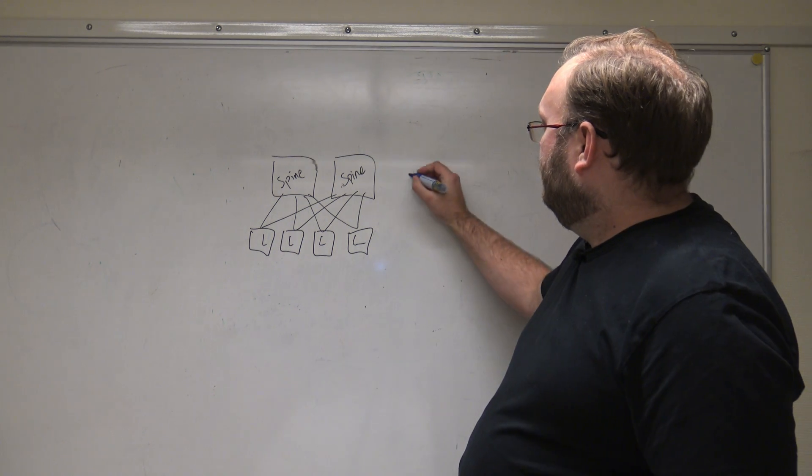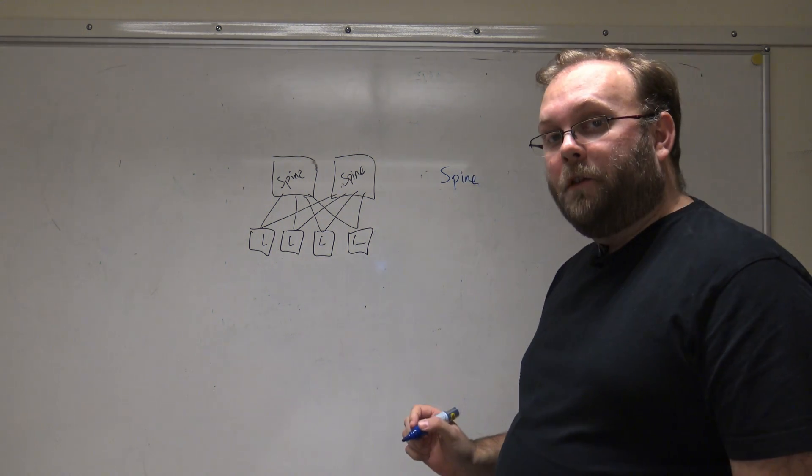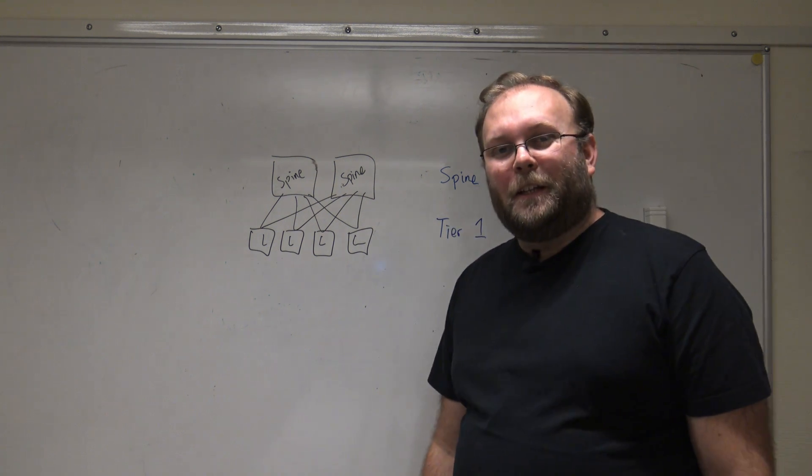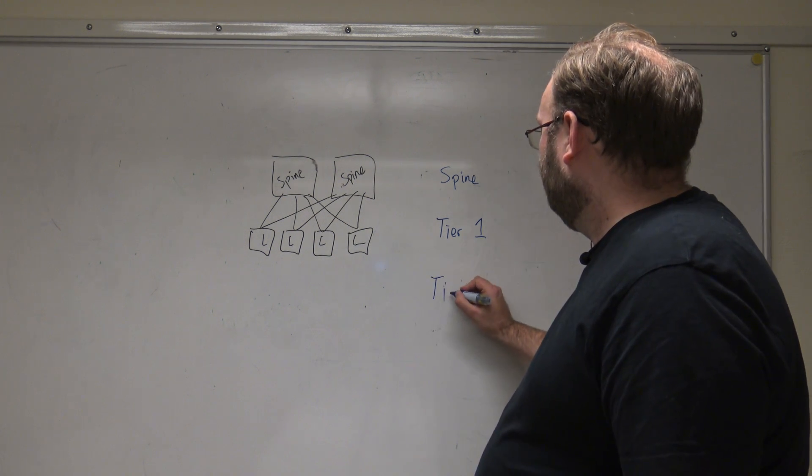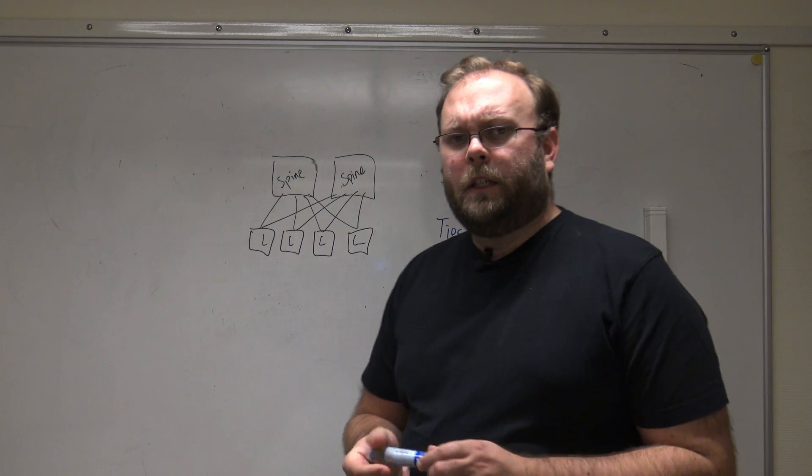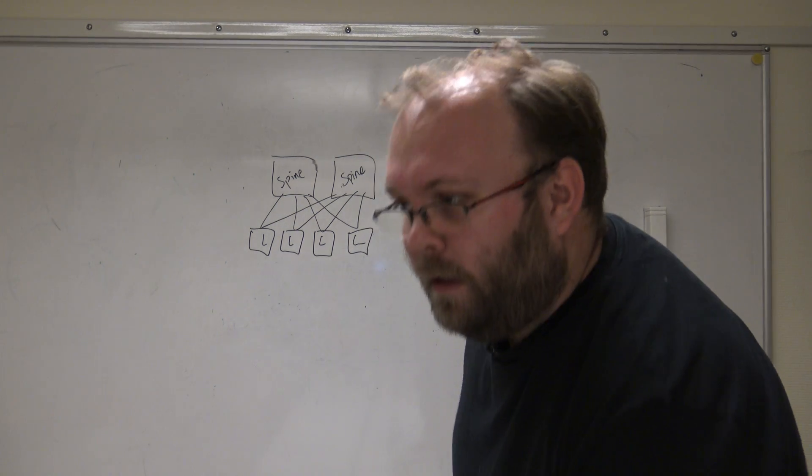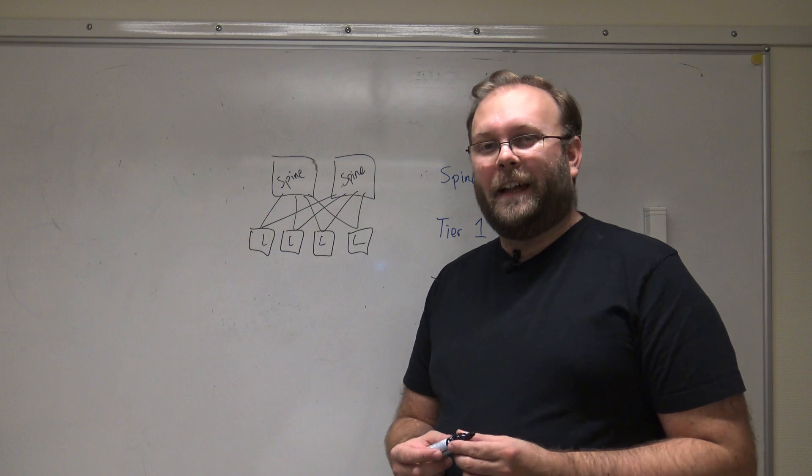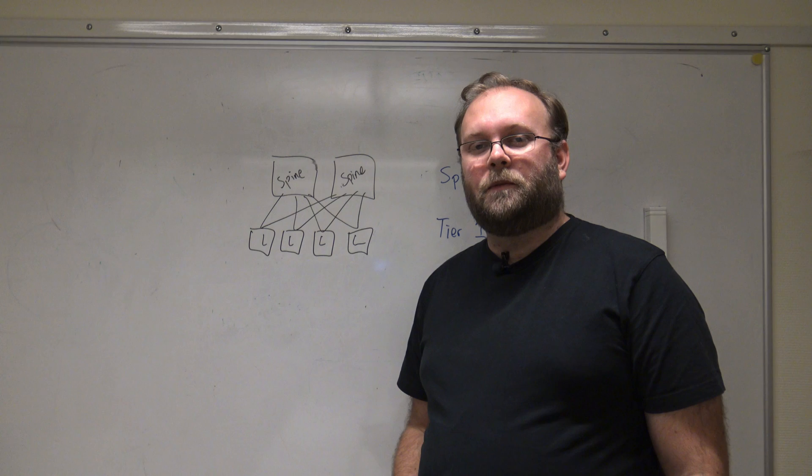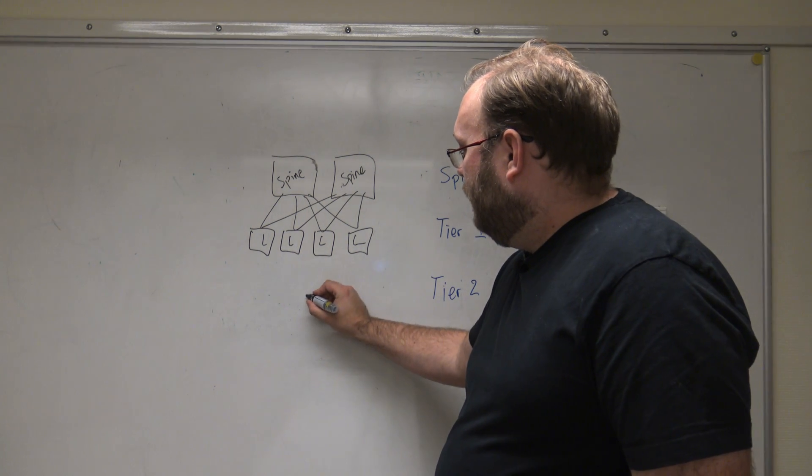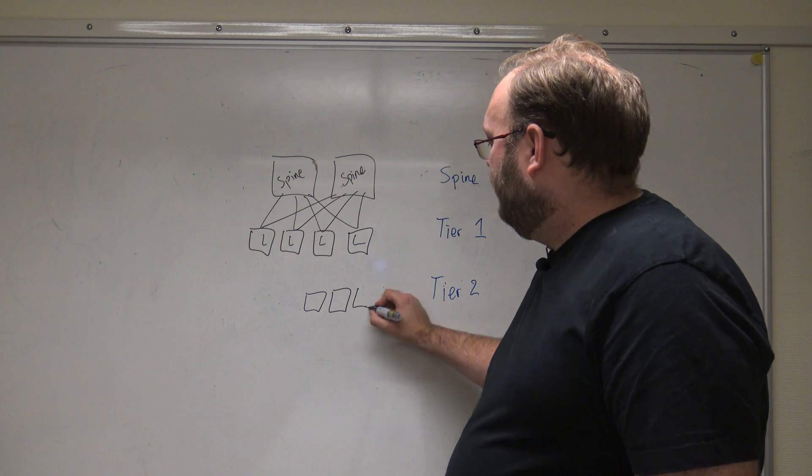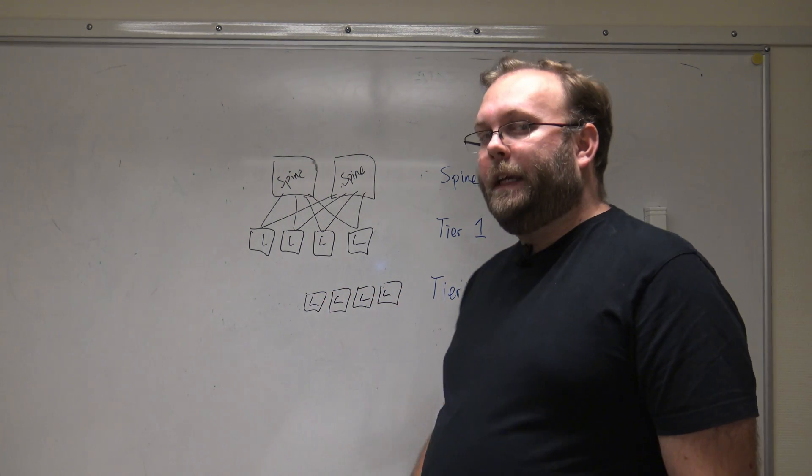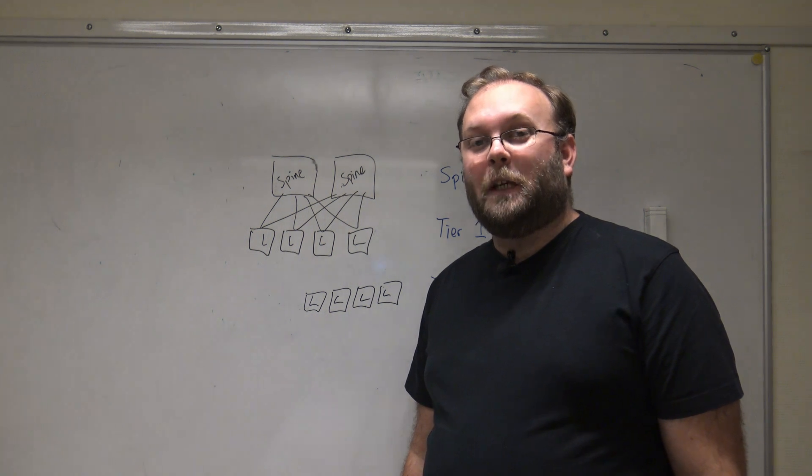So what you can do in ACI 4.1 is actually to do a multi-tier. You still have your spine layer, then you have your tier one layer, but you can add an additional tier two layer. The tier two leaf switches only need to be connected to tier one leaf switches.